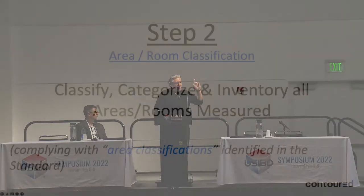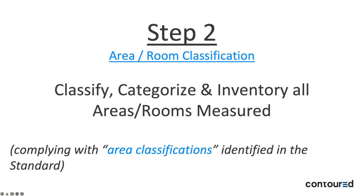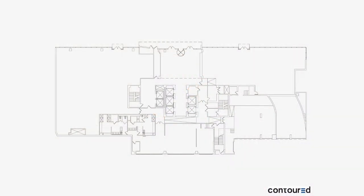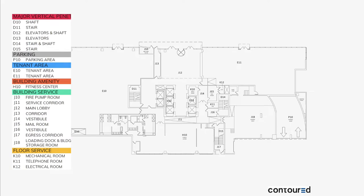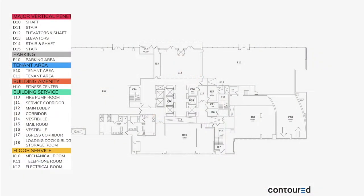Step two: we go through and inventory all the rooms. They get classified and categorized. Every single room gets a number, a name, and then it gets categorized into what we call area classification. These categories are defined by the standard. The BOMA office standard has major vertical penetrations, parking, tenant, building amenity, building service, and floor service. Each BOMA standard has different categories — industrial is different from retail versus multi-unit residential.